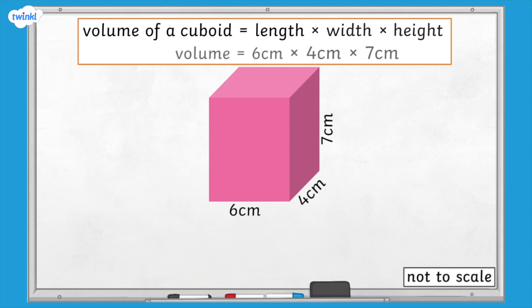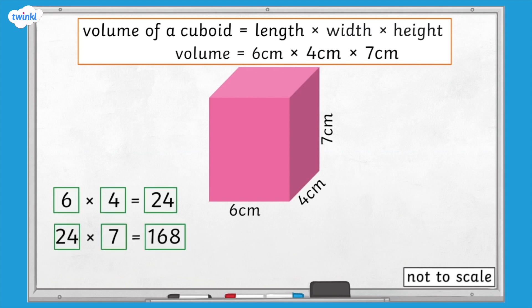So for this cuboid, we would need to multiply 6 centimetres by 4 centimetres by 7 centimetres. We would say the volume of this cuboid is 168 cubic centimetres.